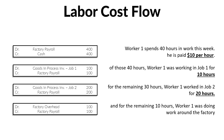So that's labor cost flow — not much different from material cost flow. This time we're using people's time in jobs rather than materials. If you haven't seen the last video and are confused about some concepts, you can find the link in the description. In the next video, we'll finally be talking about overhead: where all these factory overhead costs are going and why we haven't assigned them to specific jobs yet. See you then, and I hope you learned something.